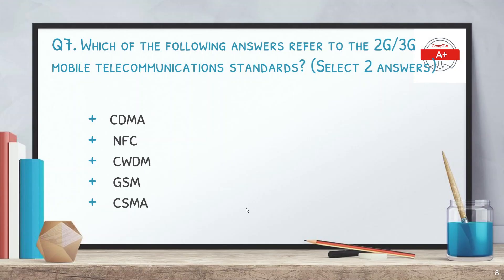The next question: which of the following answers refer to the 2G/3G mobile telecommunications standards? Select two answers. The options are CDMA, NFC, CWDM, GSM, and CSMA. The answers are CDMA and GSM — these were the standards used before 4G and 5G.